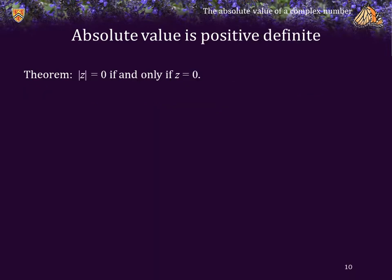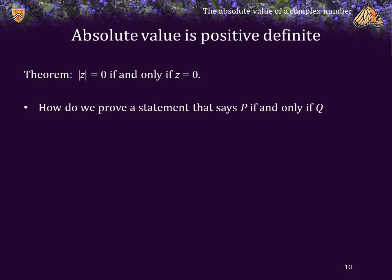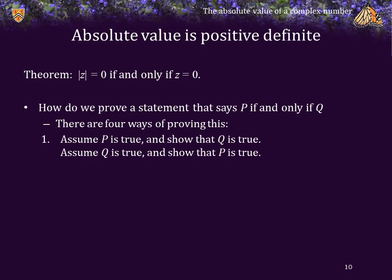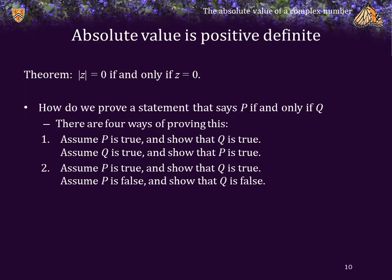Here's another theorem: the absolute value of z is equal to 0 if and only if z is equal to 0. To prove such a statement — essentially p is true if and only if q is true — there are four ways. I can show that if p is assumed to be true then q must be true, and then assume q is true and show p must be true. Or I can assume p is true and show q must be true, and then assume p is false and show q must also be false. It's insufficient to show only one of these.